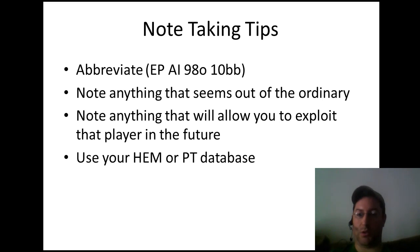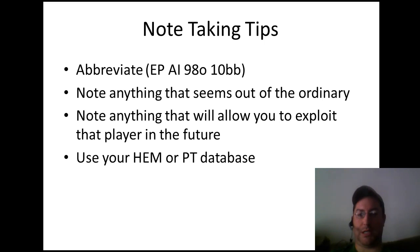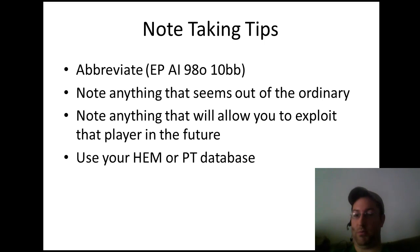Some quick tips: you want to abbreviate your notes. Everybody plays a different number of tables — some people play four tables, eight tables, twenty tables. Either way, you want to make it quick and simple so that you're not focused on typing at the actual table. For example: 'EP AI 98 off 10BB' — EP is early position, AI is all-in, with 98 off-suit for 10 big blinds. Typically shoving 10 big blinds from early position with 98 off-suit is not going to be a good play, so that's something you want to take note of.